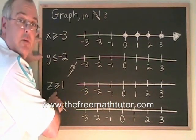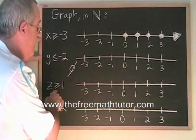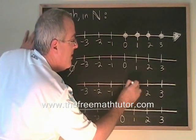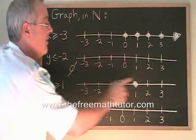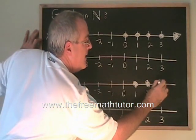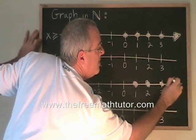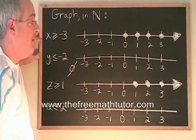z greater than or equal to 1. 1 is a natural number and it is equal to itself. So therefore, 1 will be part of our answer. All of the natural numbers that are greater than 1 will also be part of our answer. So 2 is part of our answer and 3. And again, we can draw an arrow to show that the answer continues on forever in the positive direction.